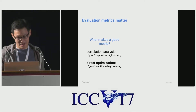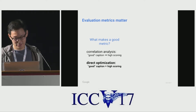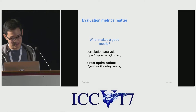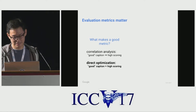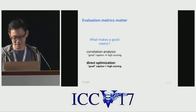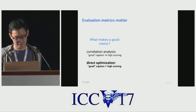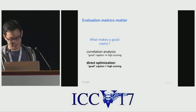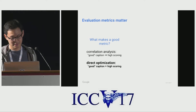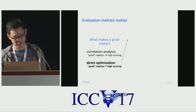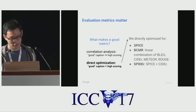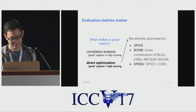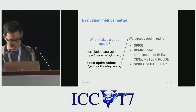However, if we take a step back, a good metric should really have two properties. Good captions should receive high scores on the metric — people have been showing this by correlation analysis, like what was done in the SPICE paper. But really, the other direction must also be true: captions that get a high score on the metric must also be good captions. We propose to show this by directly optimizing these metrics.